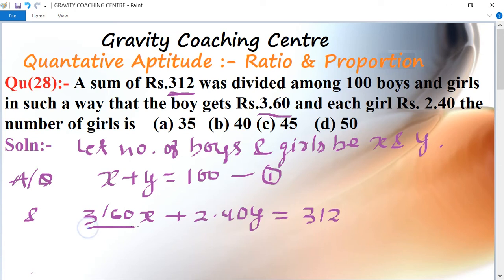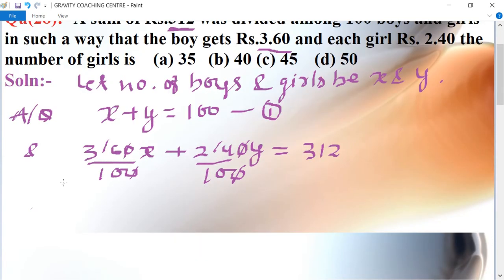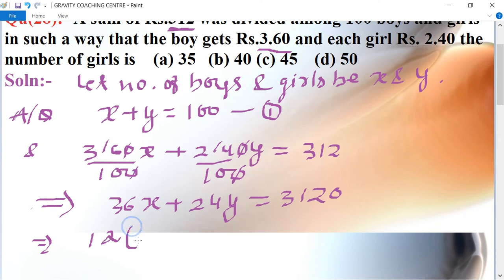To eliminate decimals, multiply by 100. This gives 360x + 240y = 31200. Dividing by 10 gives 36x + 24y = 3120. Now we have a common factor of 12.